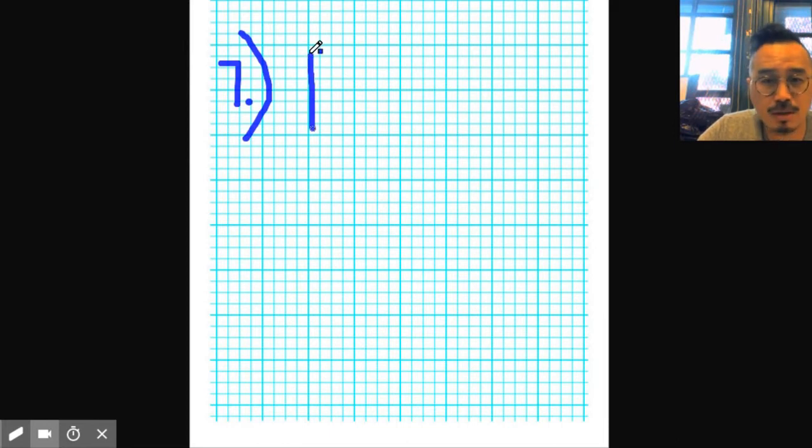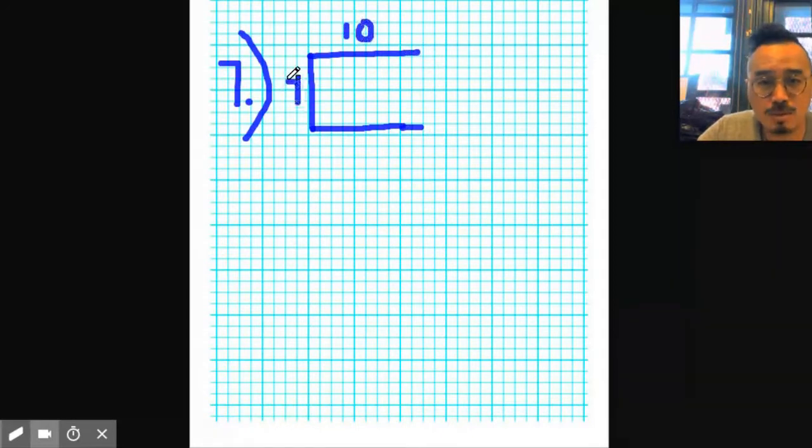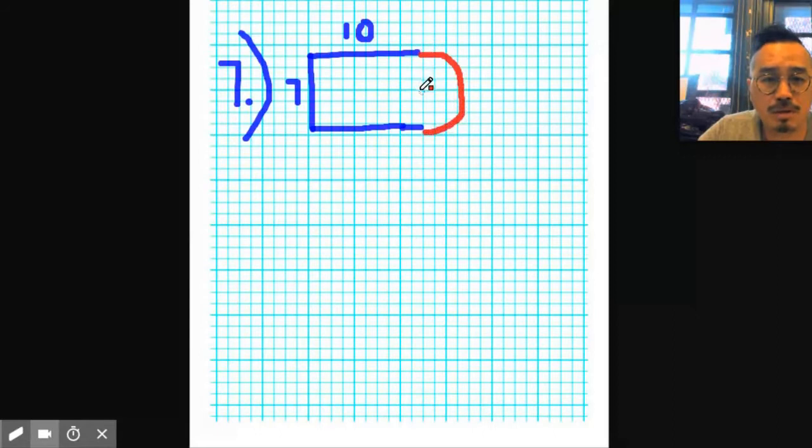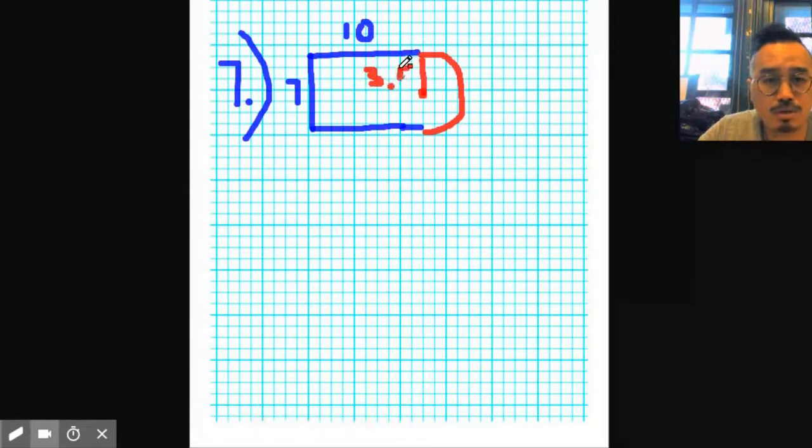Now when you look at number seven in the homework, you're going to be thrown back by the question. The reason why is because you're going to look at this and say, well, I've never learned this before, but in a way it's not true. So what I'm going to do is draw this out and show you what you're actually looking at.